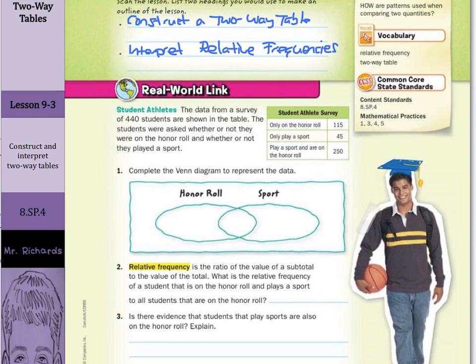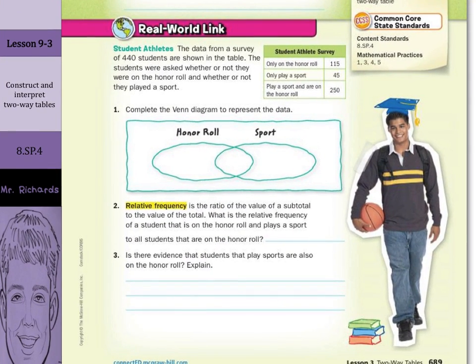Question one. Complete the Venn diagram to represent the data. We had student-athlete survey on the honor roll was 115. Only play a sport was 45. Then play a sport and are on the honor roll was 250.